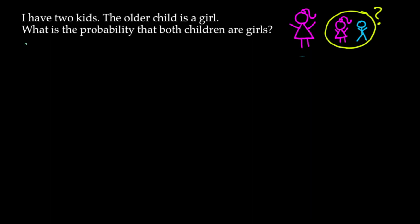The first problem says: I have two kids, the older child is a girl — what is the probability that both children are girls? Intuitively, given that you have two kids and the older one is a girl, all this is asking is what is the probability that the younger child is also a girl, and obviously this is just one-half.